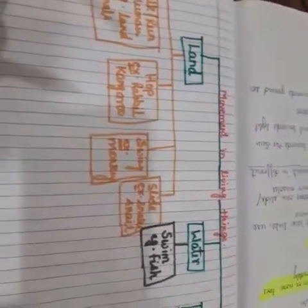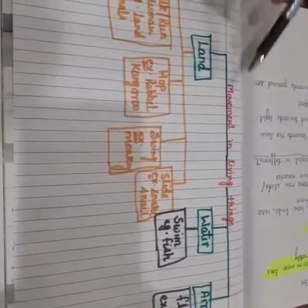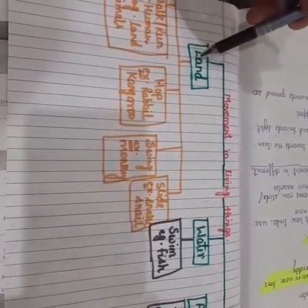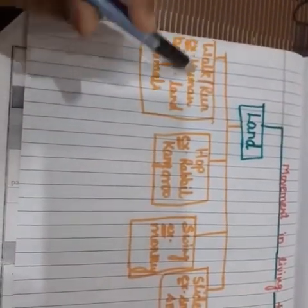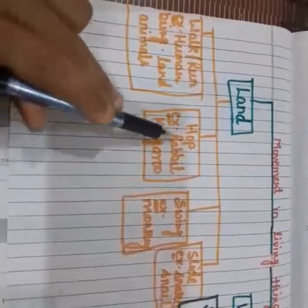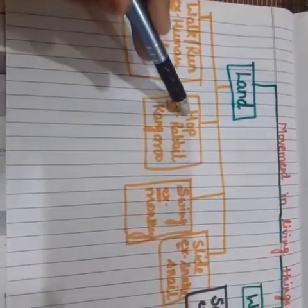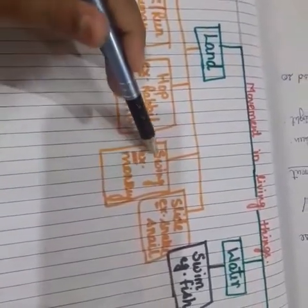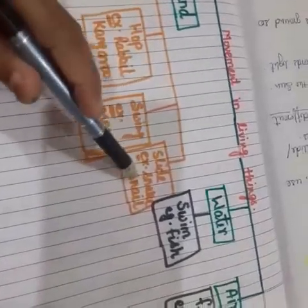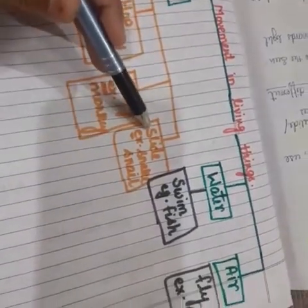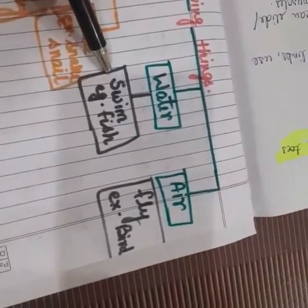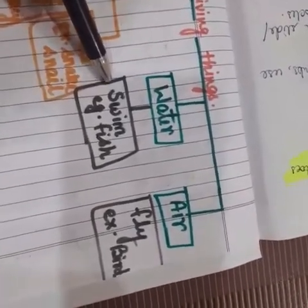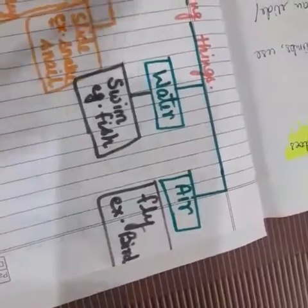Here is a summary diagram of different movements. On land: humans can walk and run; rabbits and kangaroos can hop; monkeys can swing; and snakes and snails slide. In water: fish swim using their fins and tails. In the air: birds can fly using their wings.